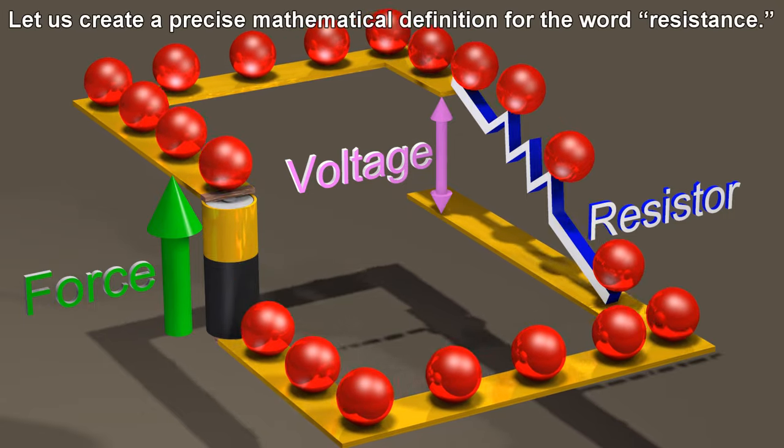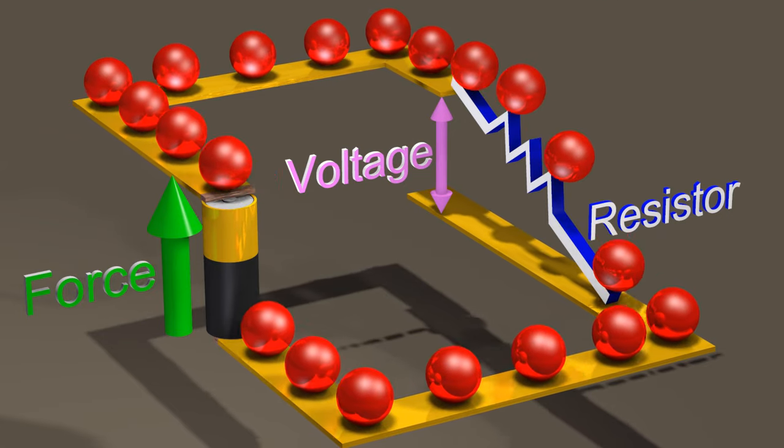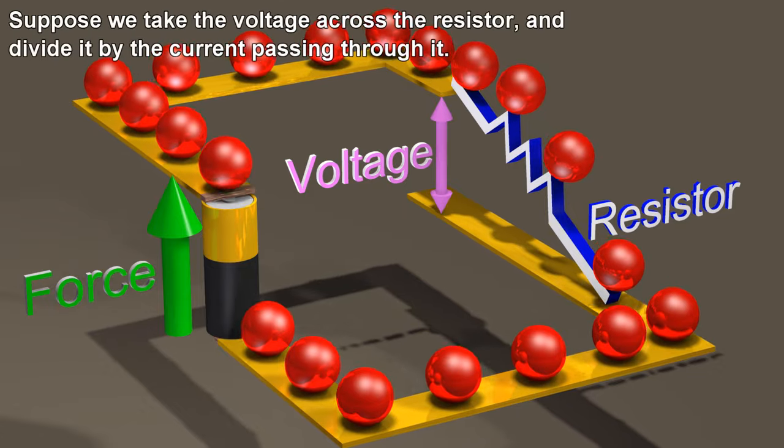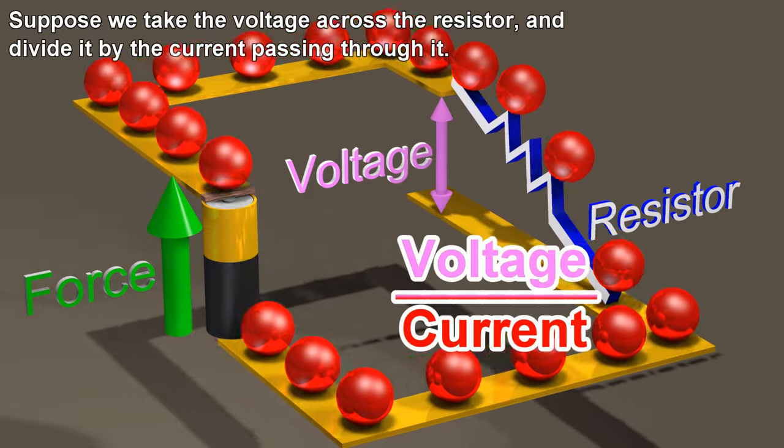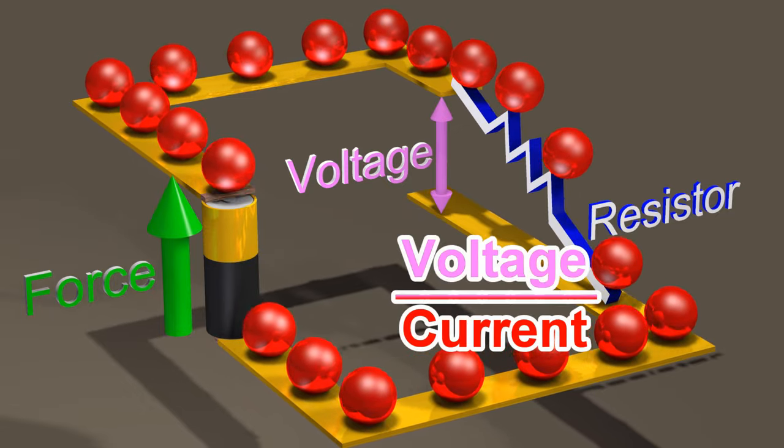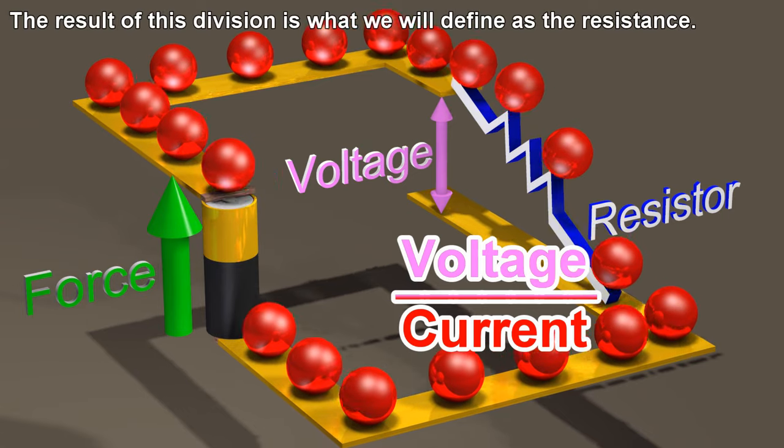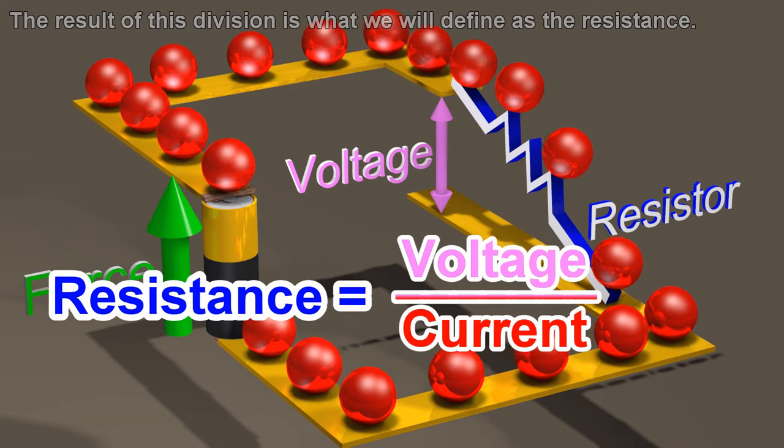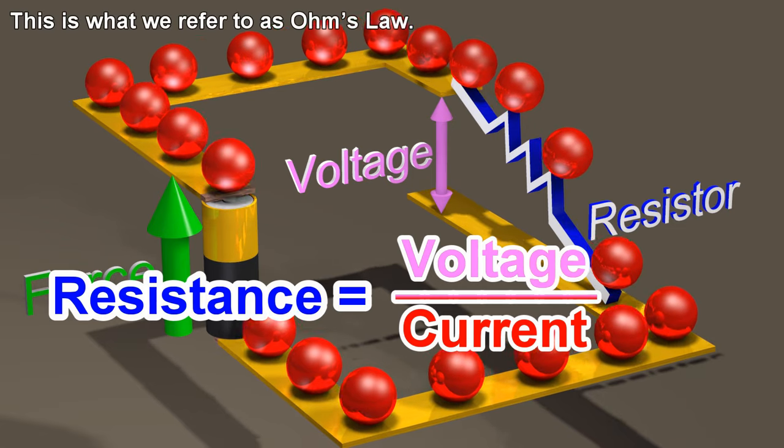Let us create a precise mathematical definition for the word resistance. Suppose we take the voltage across the resistor and divide it by the current passing through it. The result of this division is what we will define as the resistance. This is what we refer to as Ohm's law.